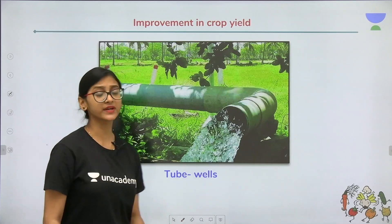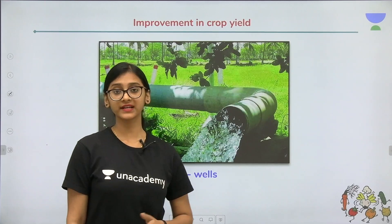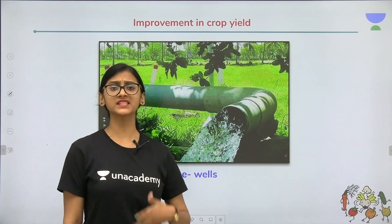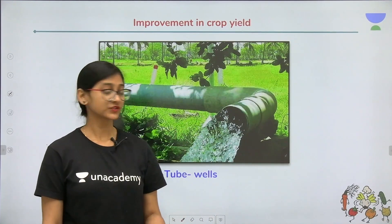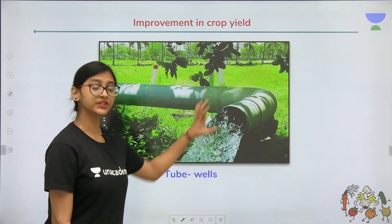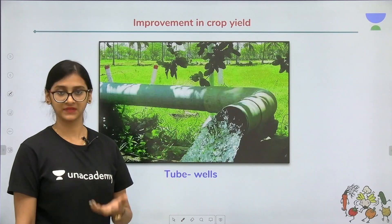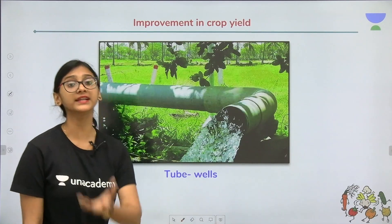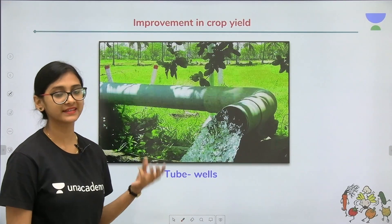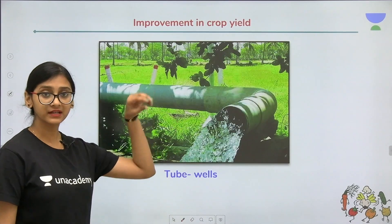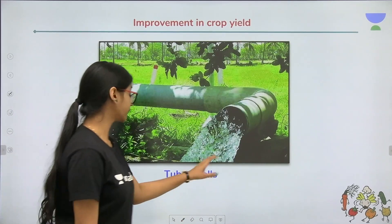Tube wells — a very good example is a bore well. People make bores to draw underground water. Drawing water from tube wells requires a pump and electricity; it is not possible to mechanically draw water from tube wells. Tube wells are really deep wells made using tubes.